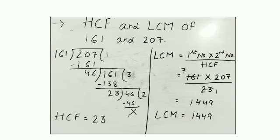Now divisor 46 becomes dividend. 23 times 2 is 46. Now remainder is 0, so we stop. 23 is the last divisor, so it is our HCF. HCF is 23. Now we will find LCM.